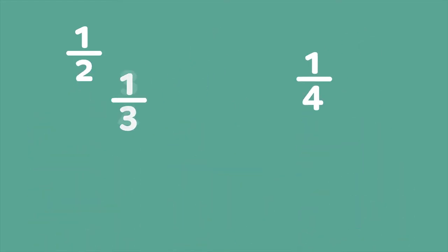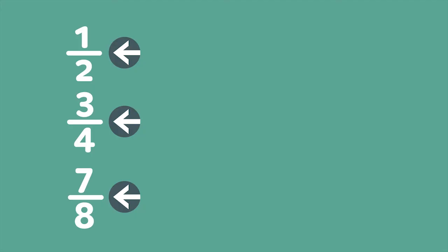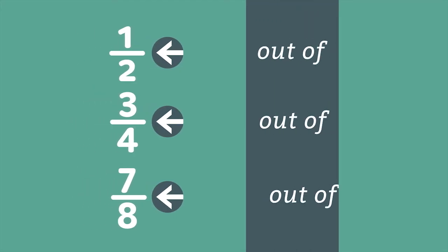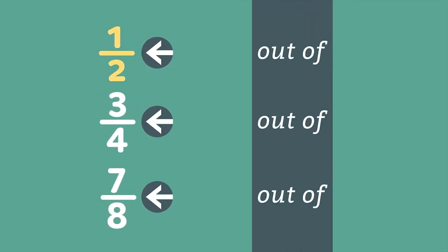Think of the horizontal line between the numerator and denominator as the words out of. For instance, this fraction means 1 out of 2. This fraction means 3 out of 4. This fraction means 7 out of 8.